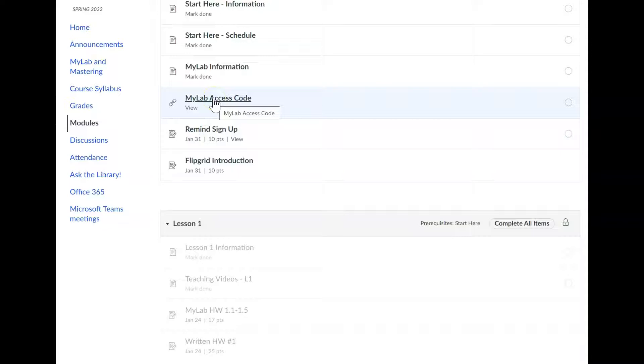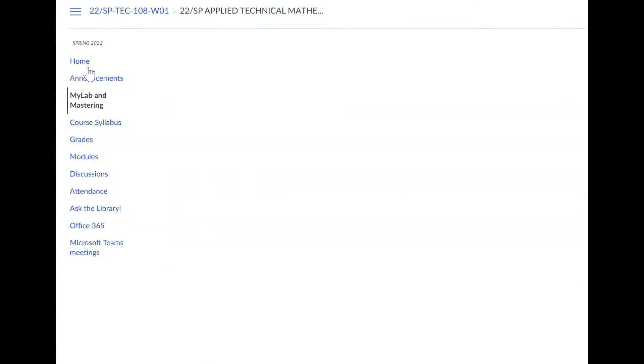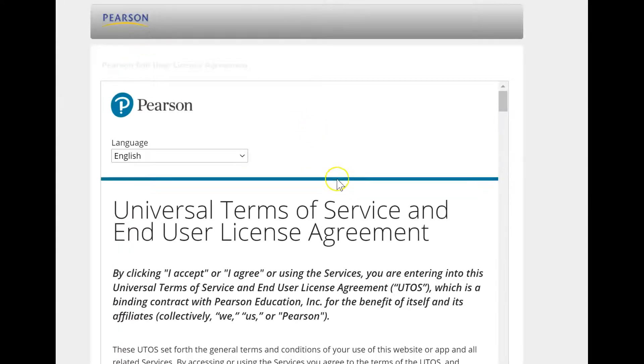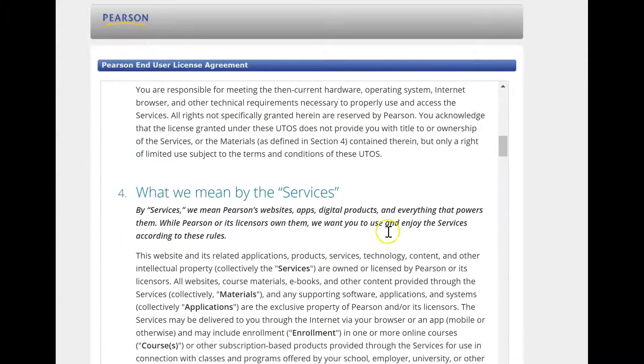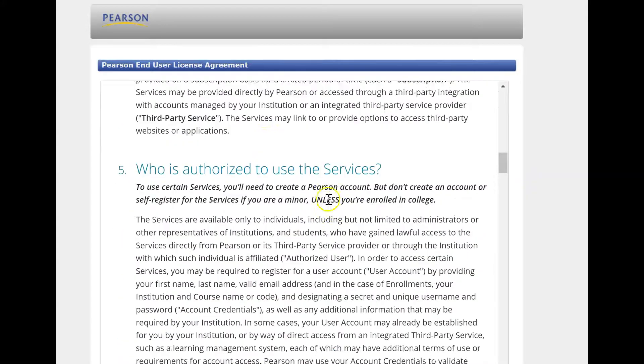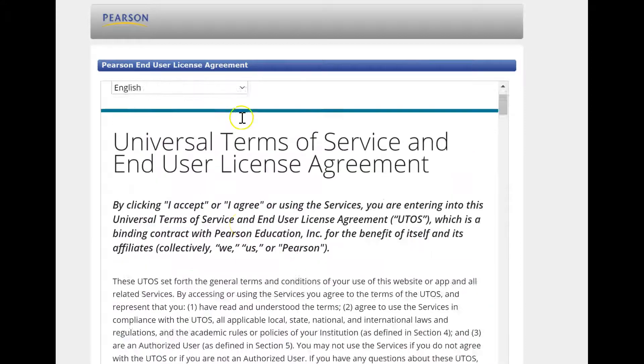And so once you get your code, keep clicking until it allows you to copy your code. And then you click on My Lab and Mastering. And then just do this and just work your way through. So it kind of takes you through all the steps. You have to accept this and so on. And then at some point, it'll have you put in that code.